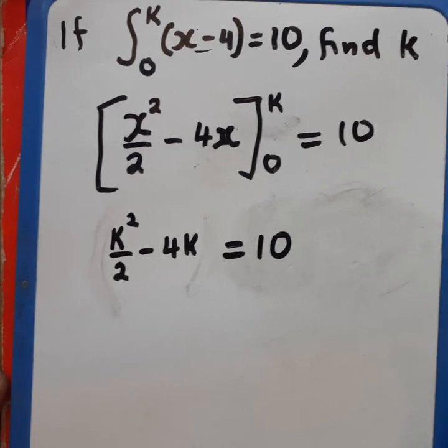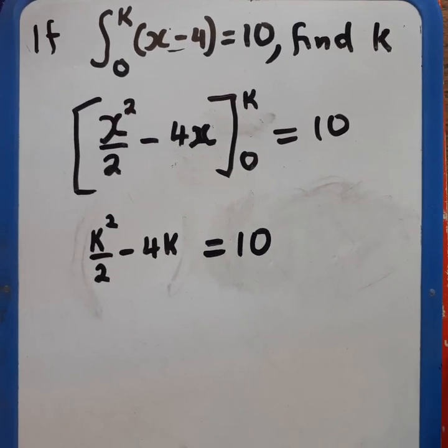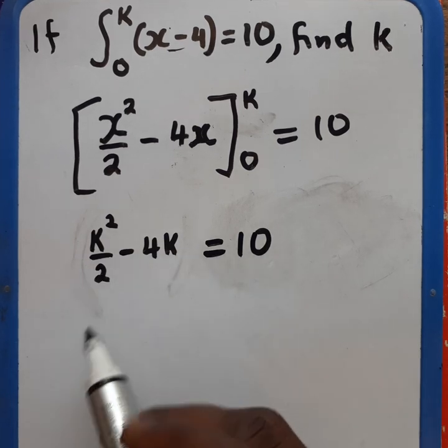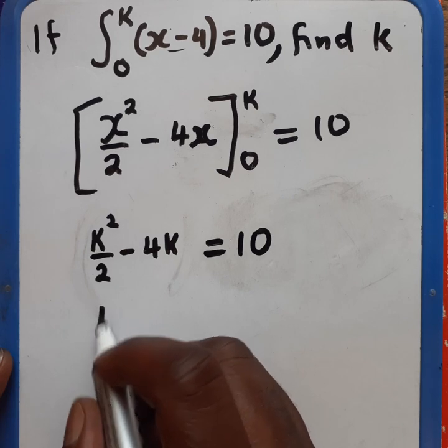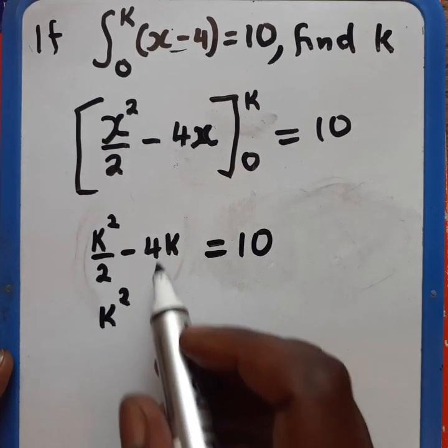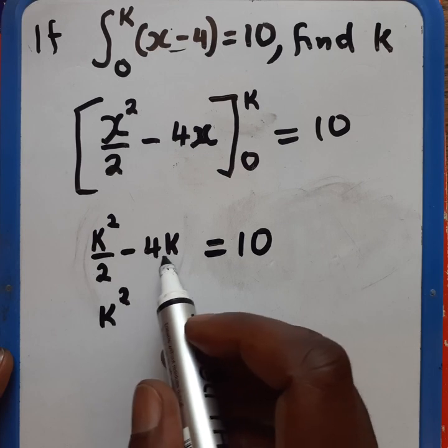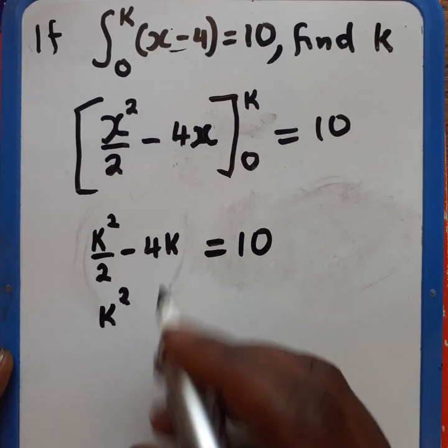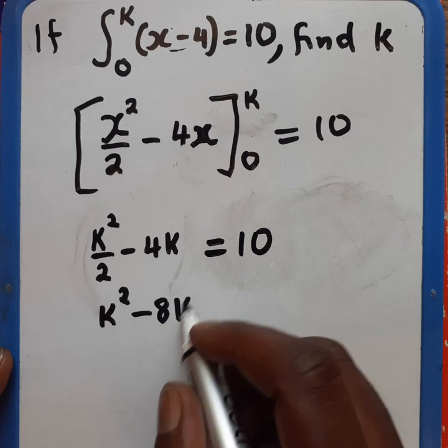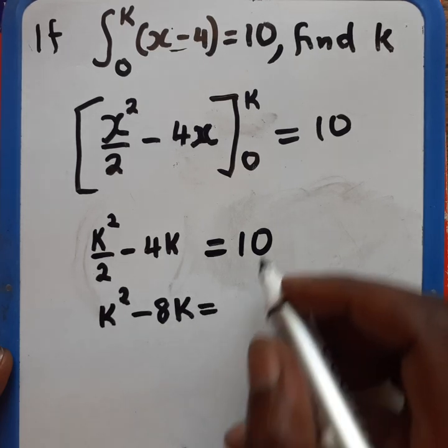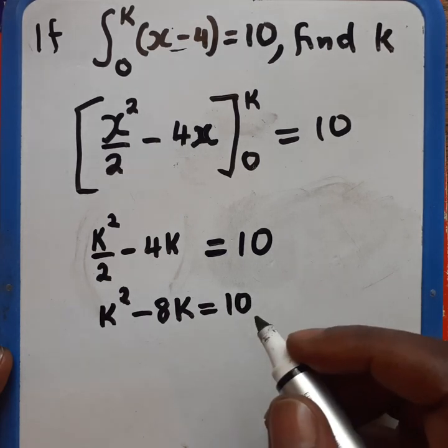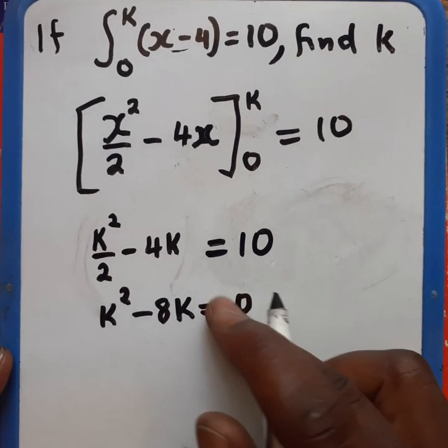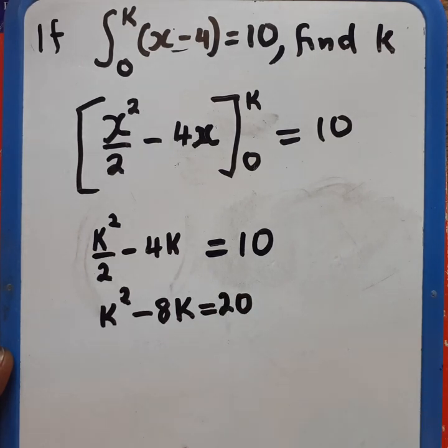When you multiply this part here by 2, it will be k squared. When you multiply this part here by 2, this is going to give you 8k. You also multiply this one by 2. It's going to give you 20.